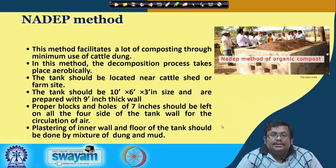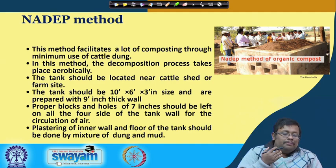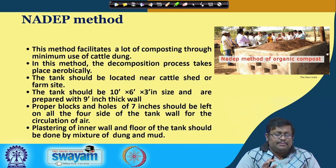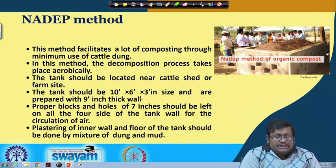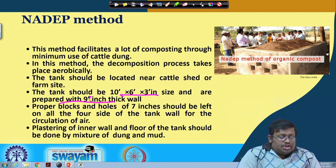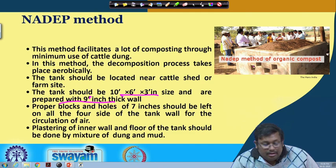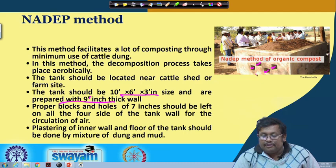Now let us talk about the NADEP method. This method facilitates composting through minimum use of cattle dung, and the decomposition process takes place aerobically. The tank should be located near the cattle shed or farm site. The tank should be 10 feet by 6 feet by 3 feet in size, prepared with 9-inch thick walls. Holes of 7 inches should be left on all 4 sides of the tank wall for air circulation — this NADEP compost bed has holes created for proper aeration.